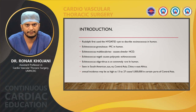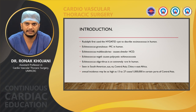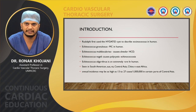Regarding epidemiology, hydatid disease is most commonly seen in South America, Australia, New Zealand, Central Asia, China, and East Africa. The annual incidence may be as high as 13 to 27 cases per 100,000 in certain parts of Central Asia.